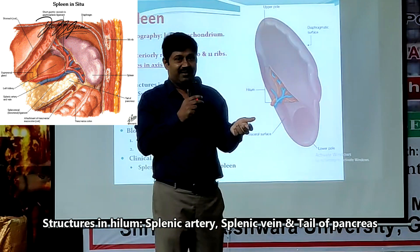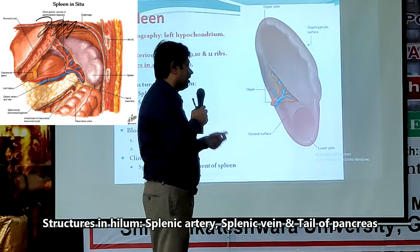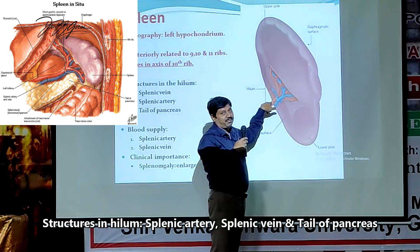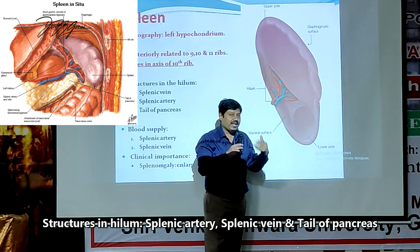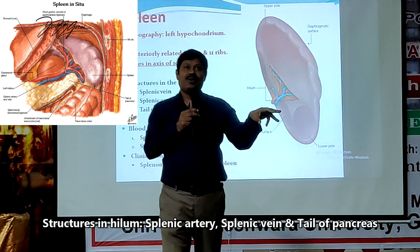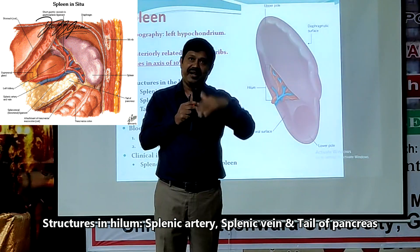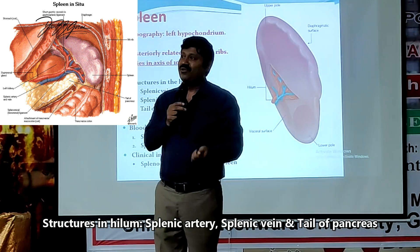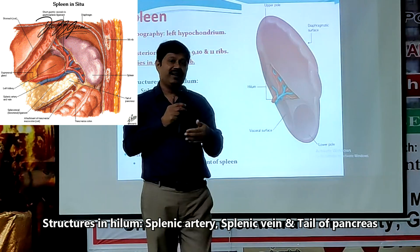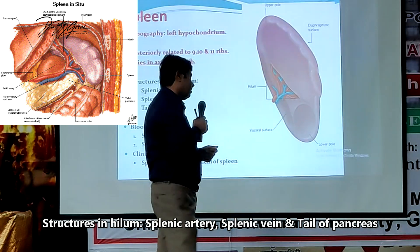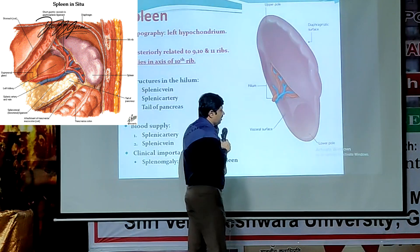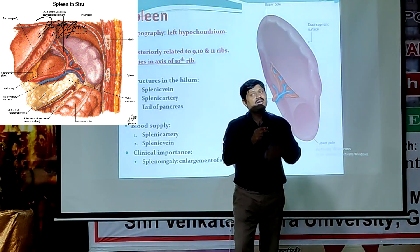The hilum is like a gate for entering structures. Within the hilum you have the splenic artery, the splenic vein, and the tail of the pancreas. These are the structures at the hilum. Then you have to ask about the splenic artery — where does it come from and where does it go? These are subsequent exam questions.